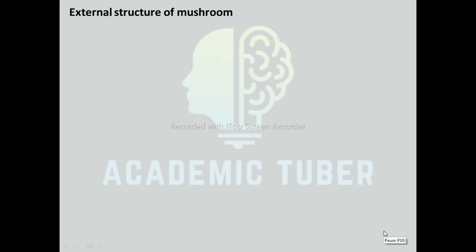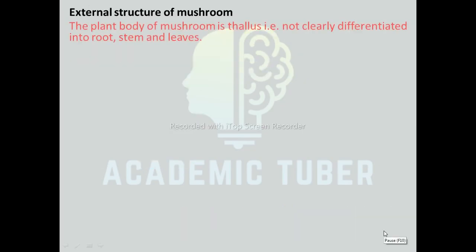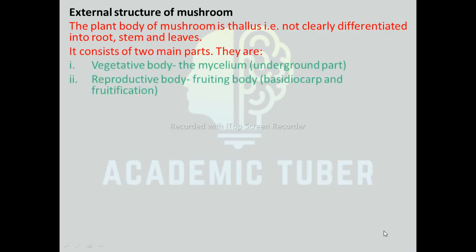Actual Structure of Mushroom. The plant body of mushroom is a thallus, that is not clearly differentiated into root, stem, and leaves. It consists of two main parts: first, the vegetative body — the mycelium, which is the underground part; and second, the reproductive body — the fruiting body, also called Basidiocarp or fructification.